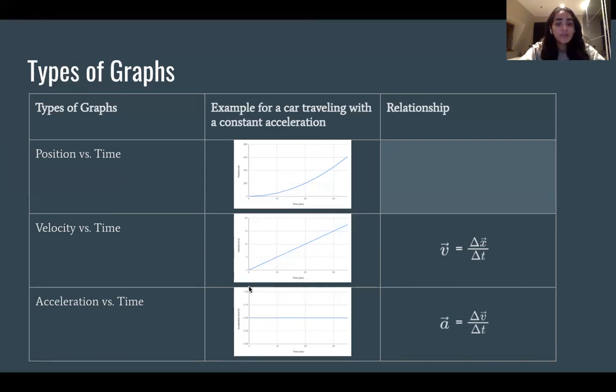And this one, the slope is continuously changing because velocity is the rate at which the position changes. Therefore we get this sort of curve.